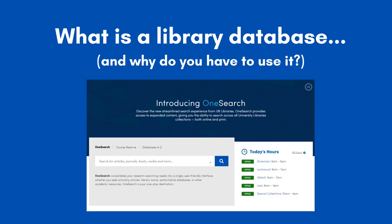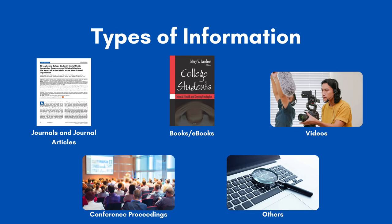So then, what is a library database and why do your instructors keep telling you to use it? A library database is a searchable list of different information sources. These can include, but are not limited to, journals and journal articles, books, video, conference proceedings, and other types of information sources that libraries collect.